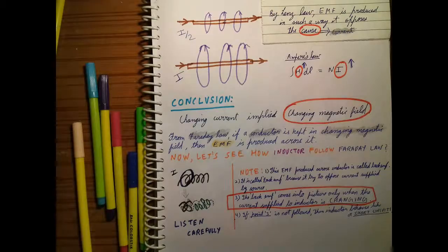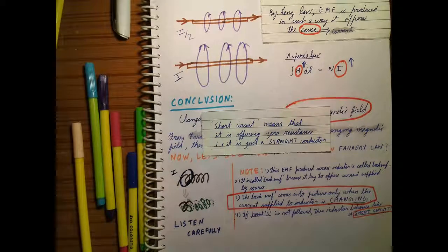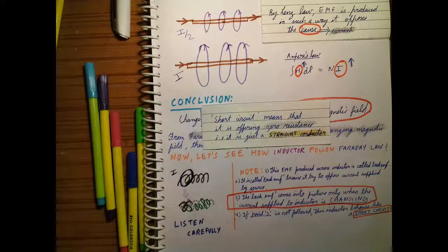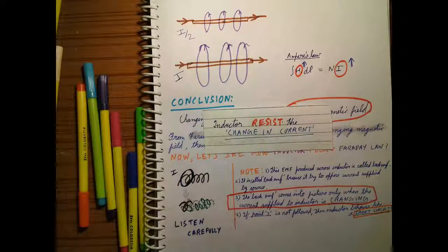From point 3 we can conclude that the inductor comes into picture and shows its properties only when the current changes. If the current is not changing, the inductor behaves as a short circuit — offering zero resistance, acting just as a straight conductor. So the inductor resists the change in current.